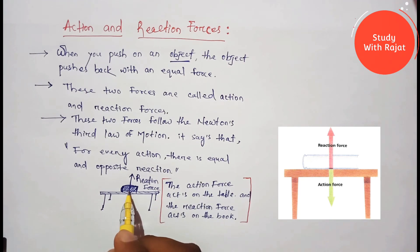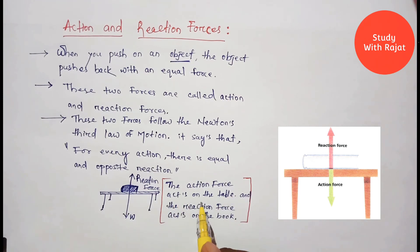So what happens in this case? Here we can say the action force acts on the table. The action force is always downward, which acts on the table, and the reaction force acts on the book. So there is a reaction force, an upward force, that acts on the book.